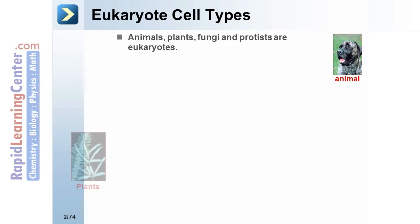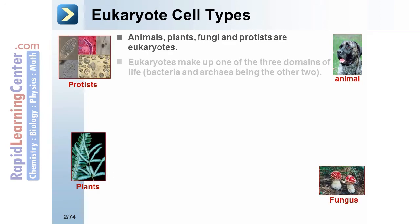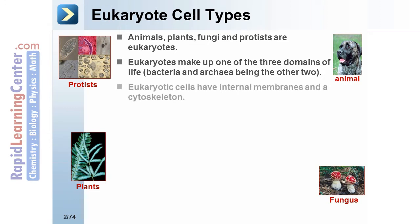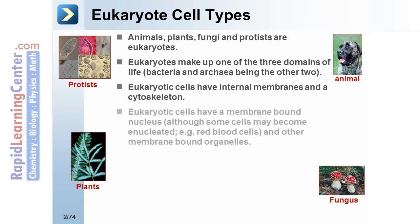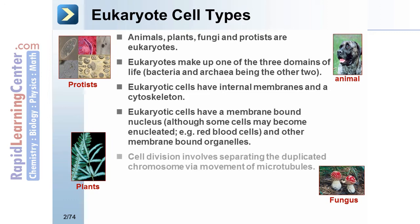Eukaryotic cell types: Animals, plants, fungi, and protists are eukaryotes. Eukaryotes make up one of the three domains of life, bacteria and archaea being the other two. Eukaryotic cells have internal membranes and cytoskeleton, as well as a membrane-bound nucleus and other membrane-bound organelles.